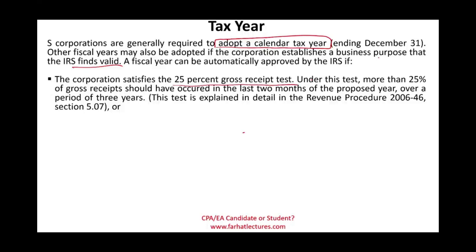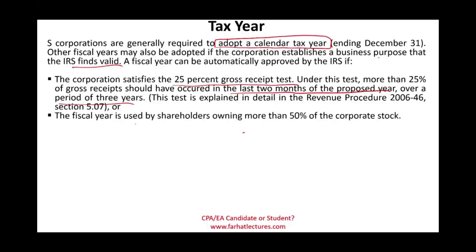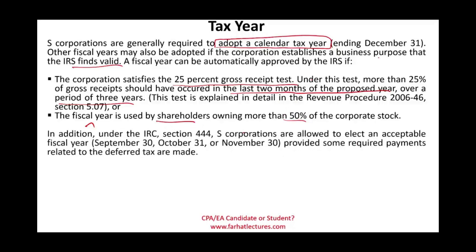A fiscal year can be automatically approved under the 25% gross receipts test: if more than 25% of gross receipts occurred in the last two months of the proposed fiscal year over a three-year period, the business has a seasonal basis. Alternatively, a fiscal year already used by shareholders owning more than 50% of the stock can justify adoption. Under Section 444 of the Internal Revenue Code, S corporations may also elect an acceptable fiscal year — September 30th, October 31st, or November 30th — provided required payments related to deferred taxes are made.